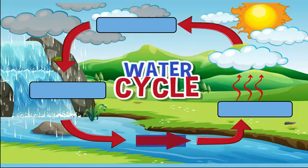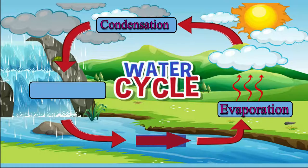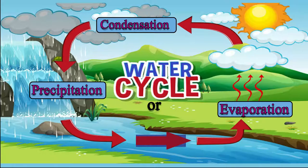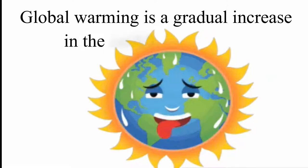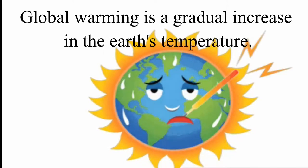The water cycle involves three processes: evaporation, condensation, and precipitation. The water cycle is also known as the hydrologic cycle. Global warming is a gradual increase in the earth's temperature.